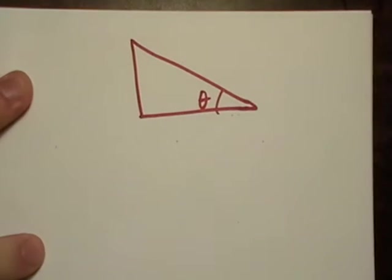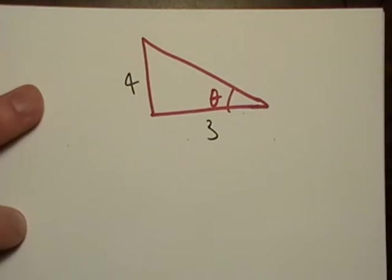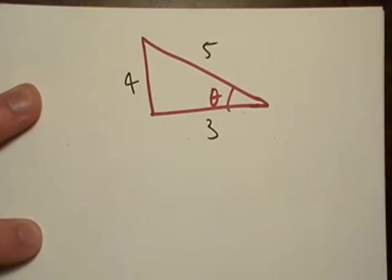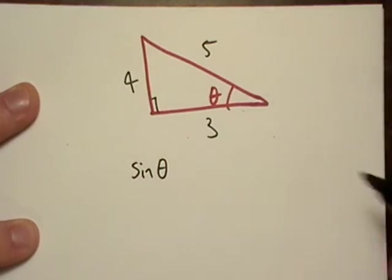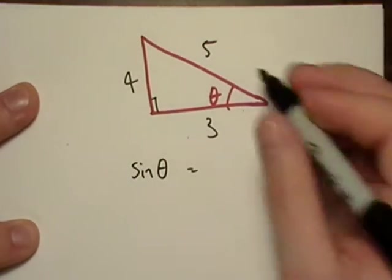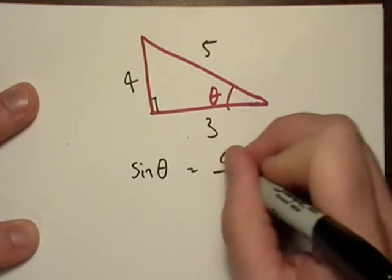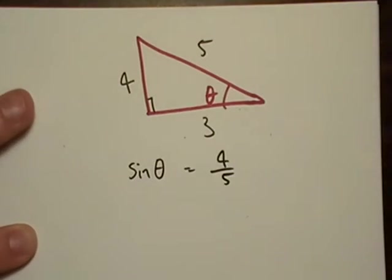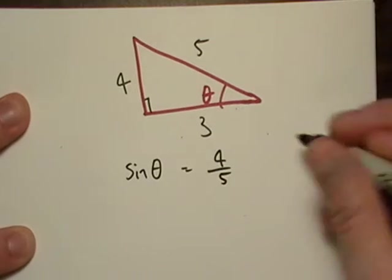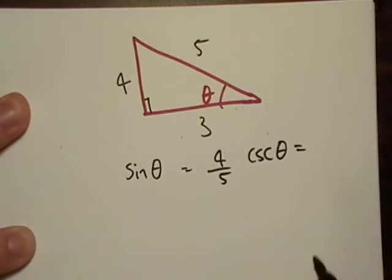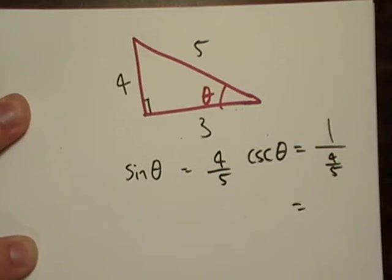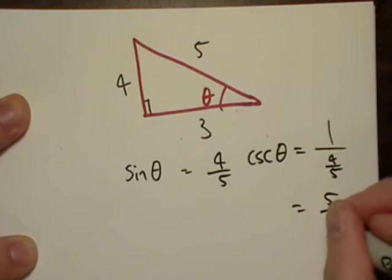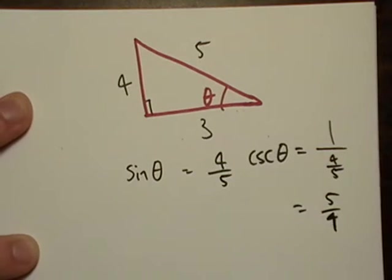Here's a right triangle. Sine of theta is going to be what? It's opposite over hypotenuse, so it's going to be four-fifths. Now, what is cosecant of theta? Well, that's one over sine theta, which is one over four-fifths, and that simplifies down to five-fourths.